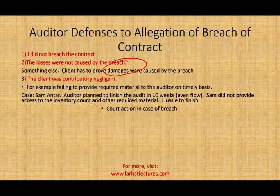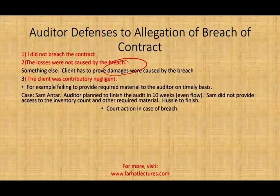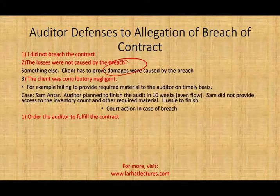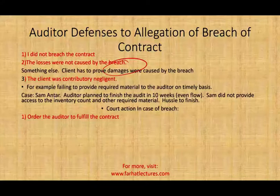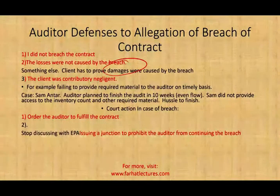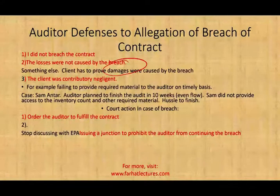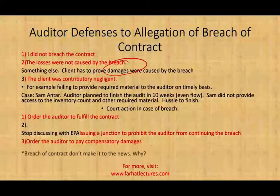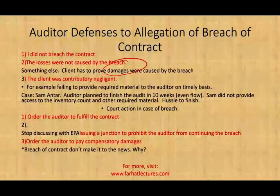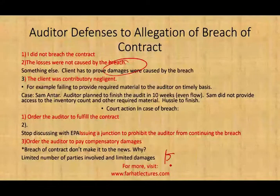What are the court actions in case of breach? First, the court can order the auditor to fulfill the contract — for example, come back and complete the audit. Second, they can order an injunction to prohibit you from continuing the breach, such as stop discussing the case and preserve client confidentiality. Third, they may ask you to pay compensatory damages. Breach of contract cases don't make the news often because they involve limited parties and relatively smaller dollar amounts compared to cases involving publicly traded companies, though they do happen.